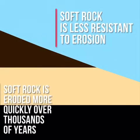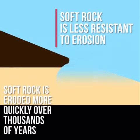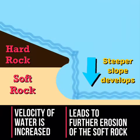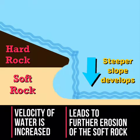The soft rock is less resistant to erosion than hard rock so it is eroded more quickly over thousands of years. A steeper slope begins to develop which increases the velocity of the water leading to further erosion of the soft rock.